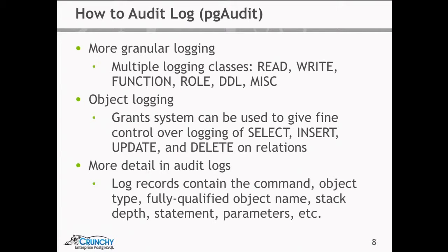On top of that, PGAudit has object logging. What you can do is create some audit roles, grant them permissions on tables, and basically tell PGAudit to only log the things that this role has permissions to see. That becomes quite granular — you can log certain columns or not log certain columns, certain tables, a collection of tables. Any of these GUCs can be set at a role level, so you could have certain logon roles that have certain audit rules and others with different rules.